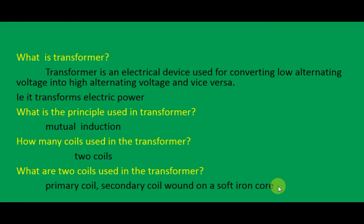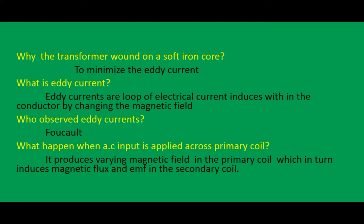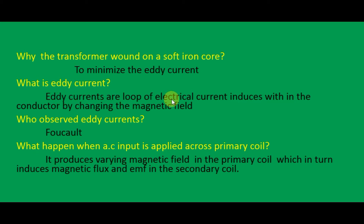Why is the transformer wound on a soft iron core? What is the reason for the transformer being wound on a soft iron core? That is to minimize the eddy current — to reduce the eddy current, we use the soft iron core.